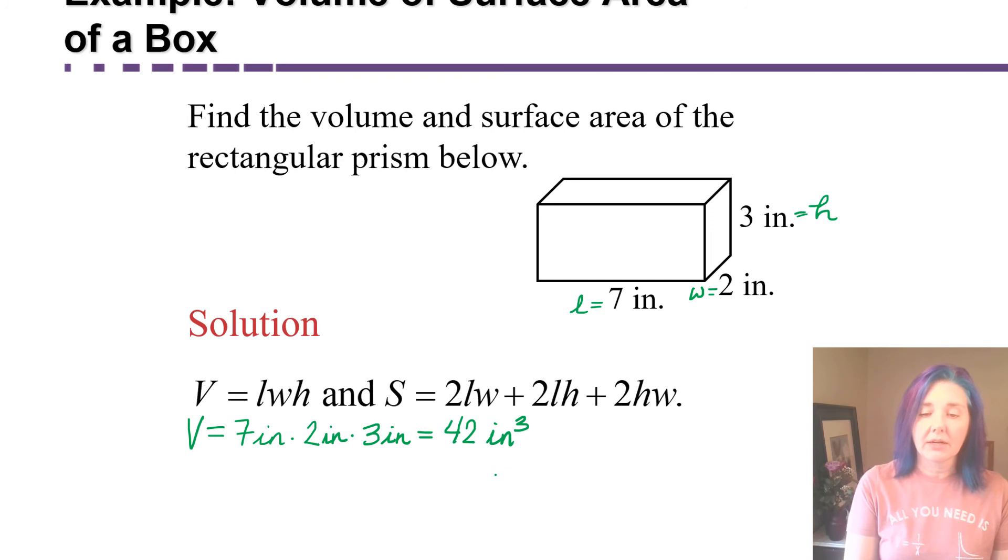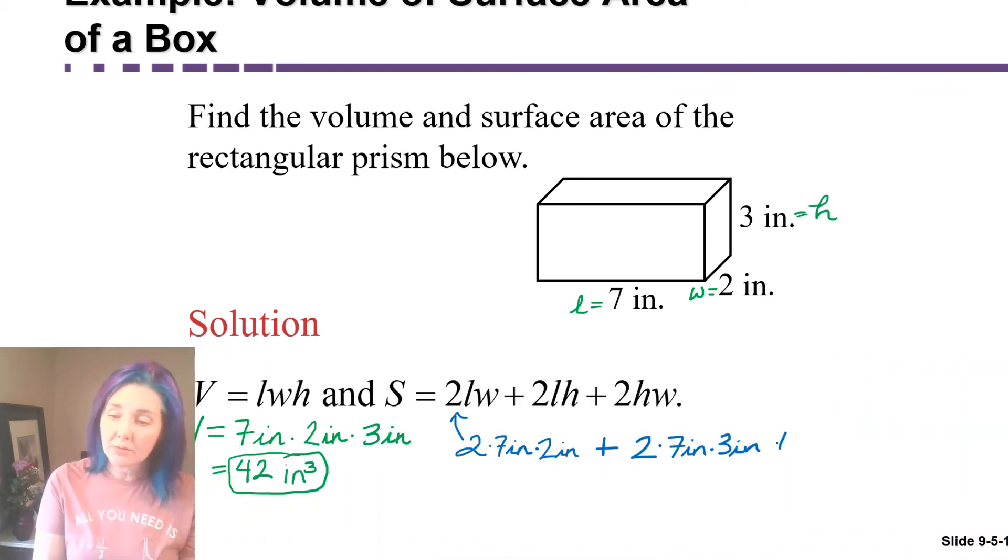Now let's find the surface area. To find the surface area, we're going to use this formula, the one with the S for surface area. We're going to have two times the length, which is two times seven inches, times the width, two inches, plus two times the length, which is seven inches, times the height, which is three inches, plus two times the height, which is three inches, times the width, which is two inches.